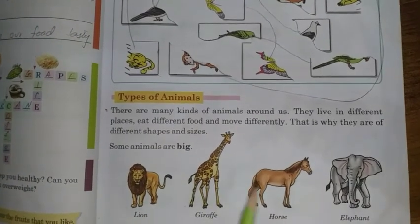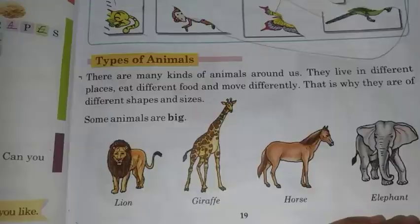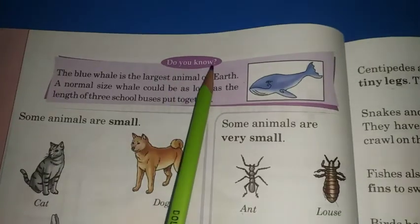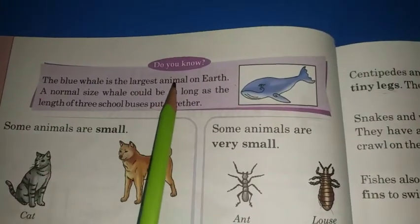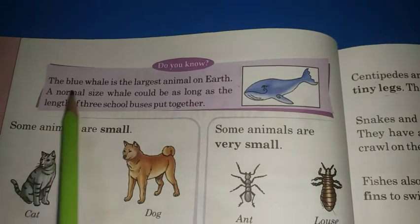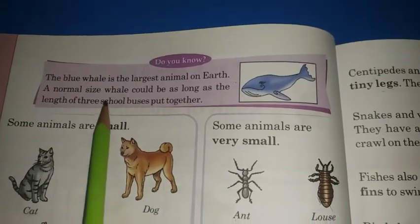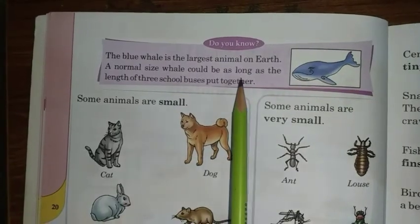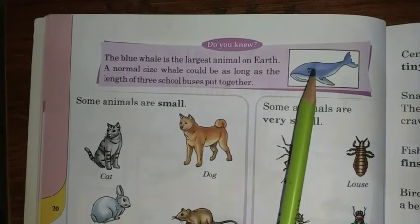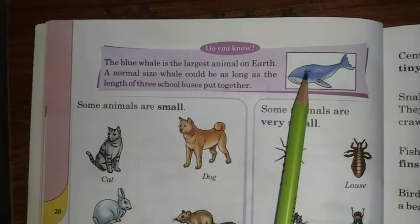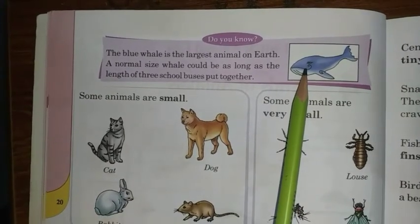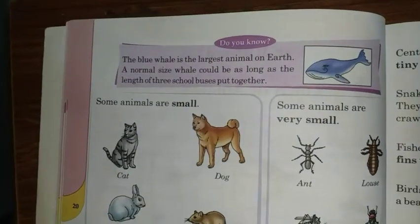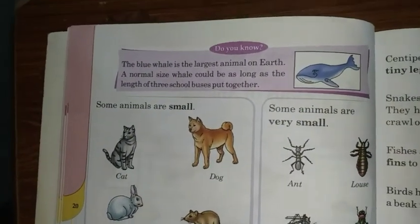You can see here some animals — some animals are wild. Here is an interesting fact: do you know the blue whale is the largest animal on earth? A normal size whale could be as long as the length of three school buses put together.